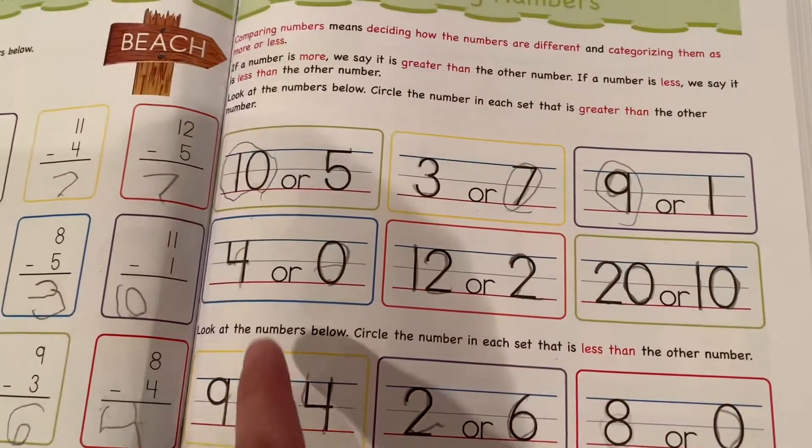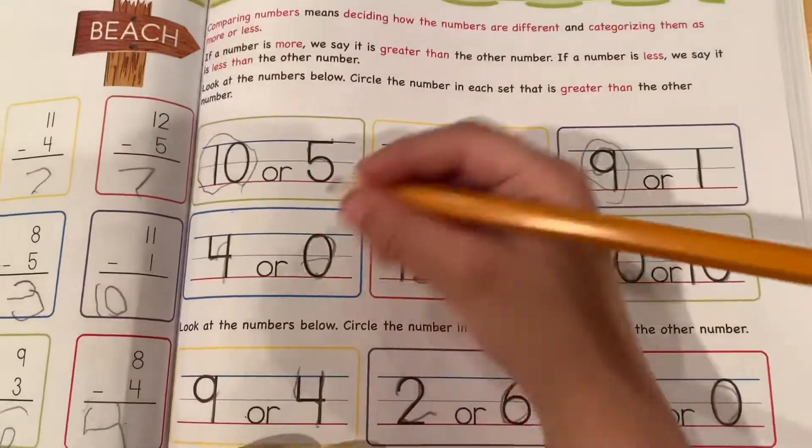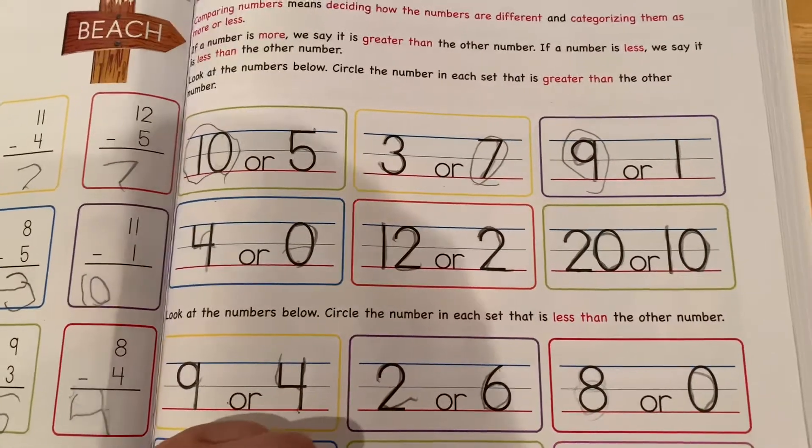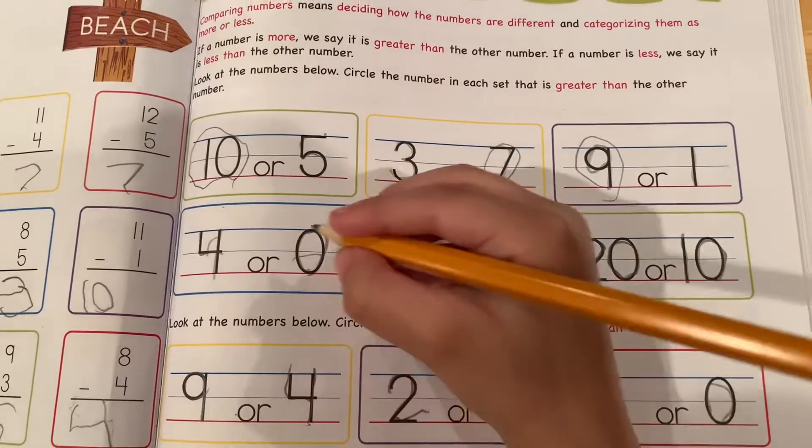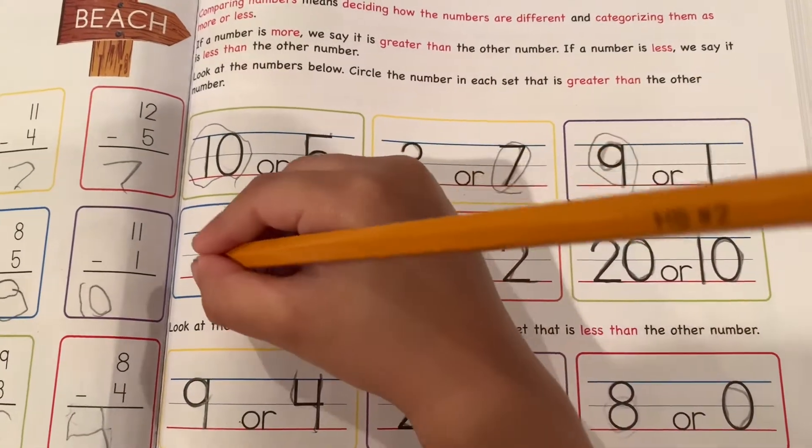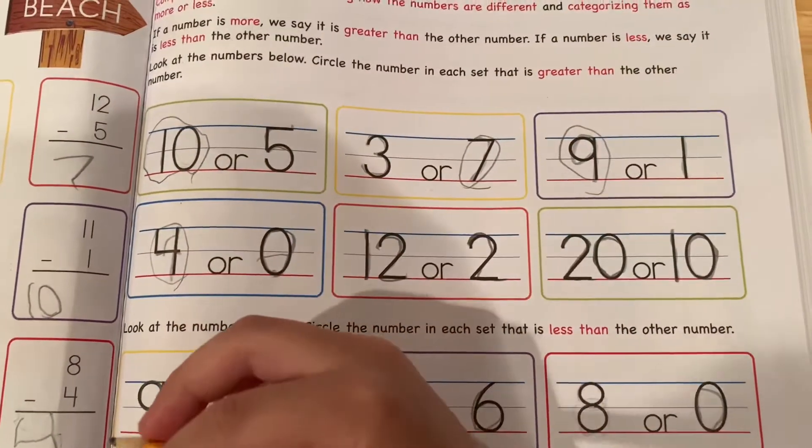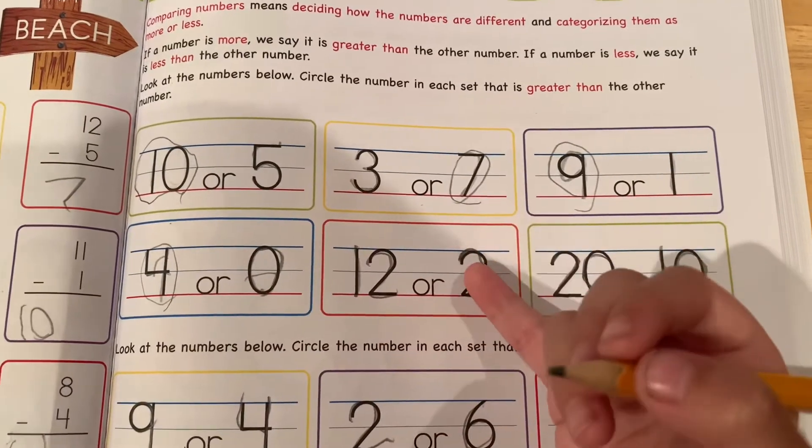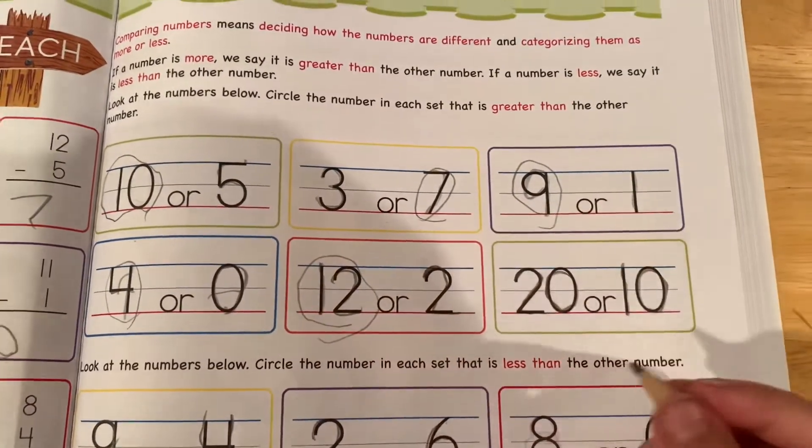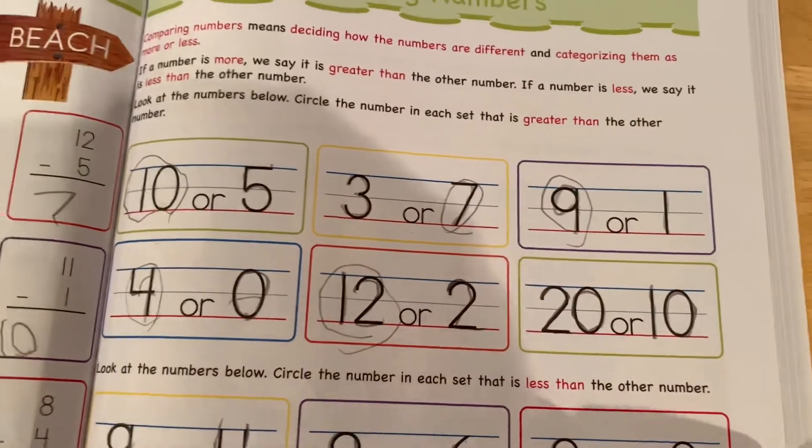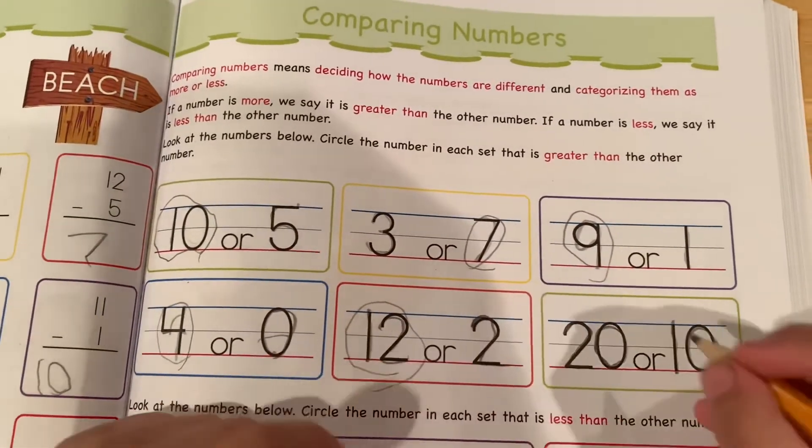How about four or zero? Which is more? Four? Yes. Max, which is more? Twelve or two? Two. Which is more? Twenty or ten? Twenty. Okay.